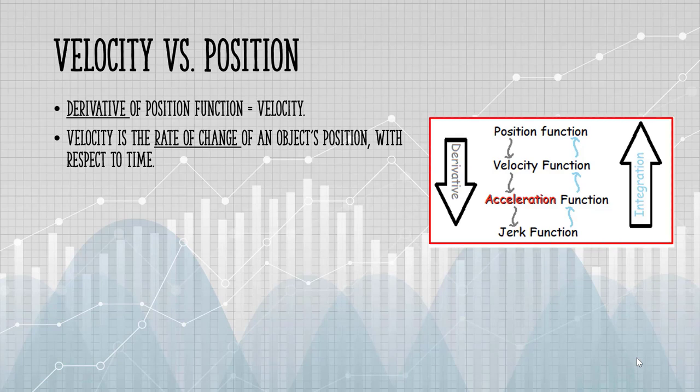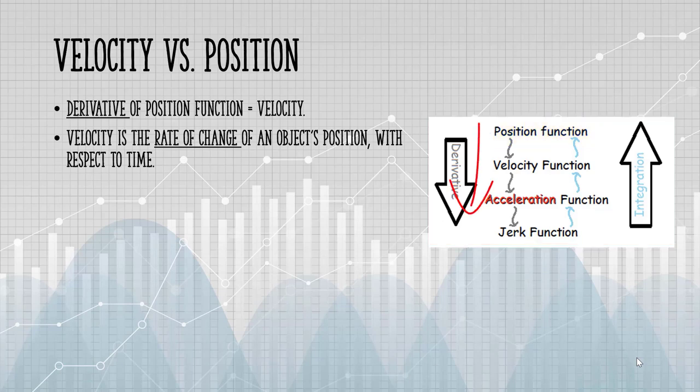This graph shows you how position, acceleration, and velocity are related by derivatives and integrals. Let's say you had the velocity function. In order to find the position function, you would have to integrate. Let's say you had a position function. In order to find the velocity function, you would take the derivative. And in order to find acceleration, you would take the derivative twice.